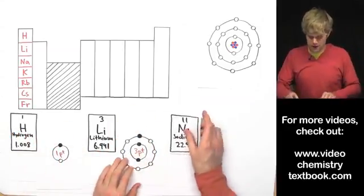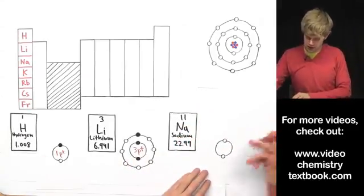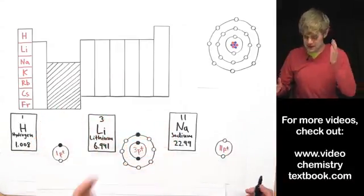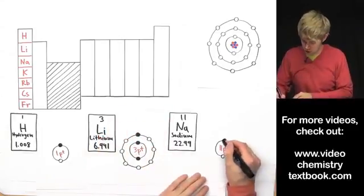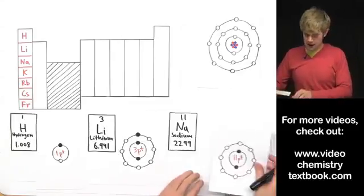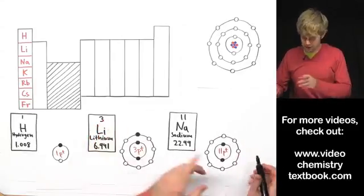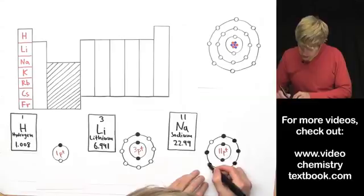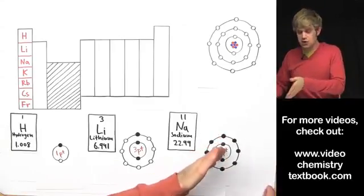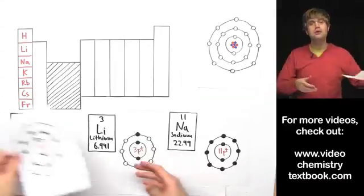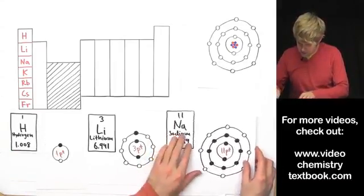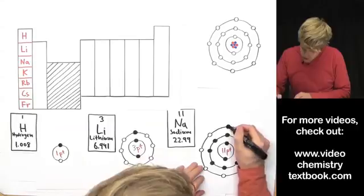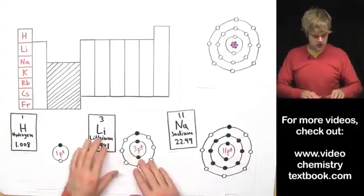Now let's look at sodium. Sodium has 11 protons, so if it's neutral, it has 11 electrons. We fill the first energy level with two electrons, then the second energy level with eight more — that's ten total — and since we still have one more electron, it bumps out to the third energy level. So sodium ends up with one electron in that outermost third shell.